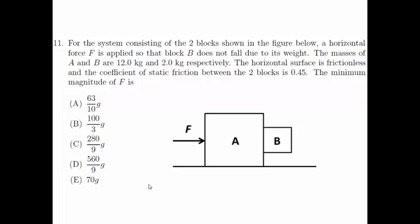The masses of A and B are 12 kg and 2 kg respectively. The horizontal surface is frictionless and the coefficient of static friction between the two blocks is 0.45. The minimum magnitude of F is: